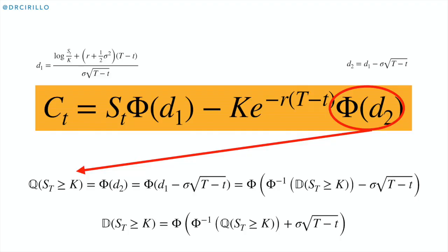D, Q, and P are equivalent — they agree on what is possible and what is not — but when something is possible, they may assign different probabilities, giving different masses to different events. Let's see what is the connection between D and Q. The probability of being in the money according to the risk-neutral measure is Phi(D2). We can exploit the connection between D2 and D1: D2 equals D1 minus sigma times the square root of (T − t).